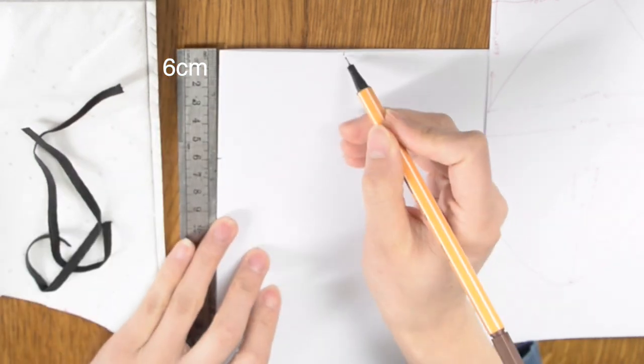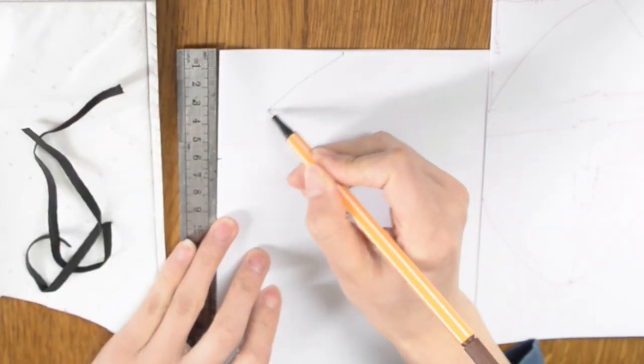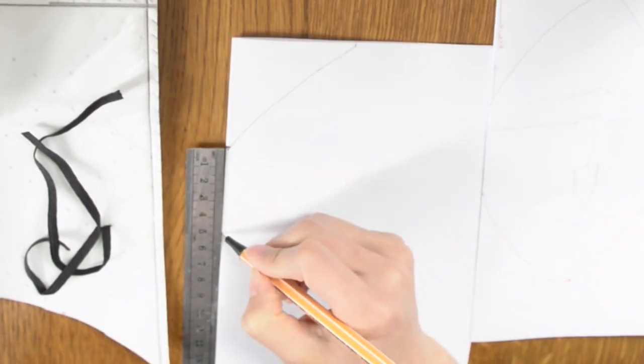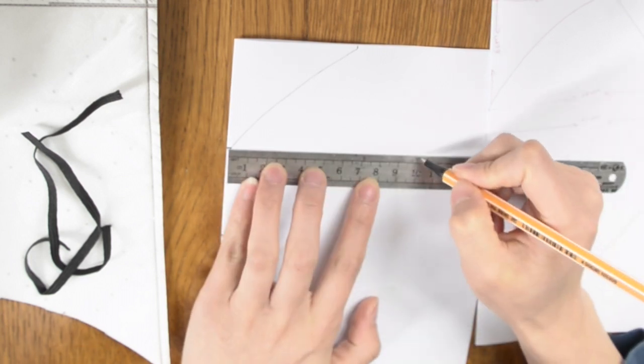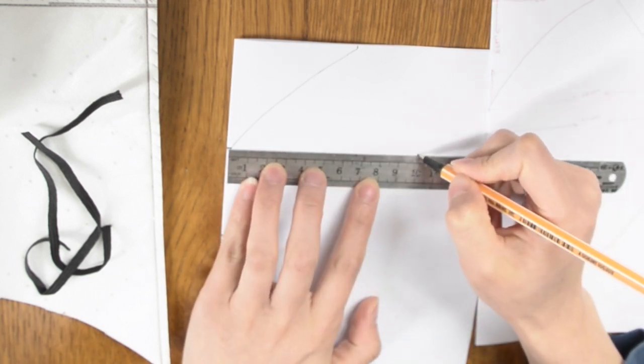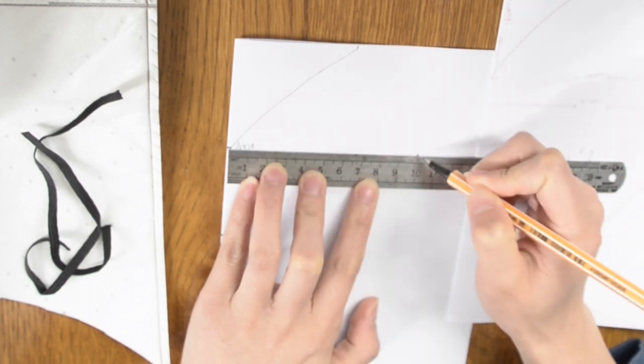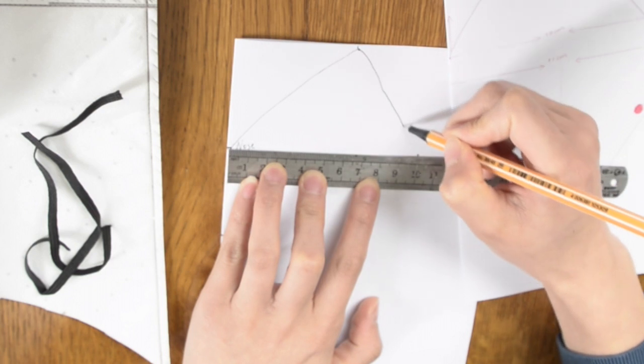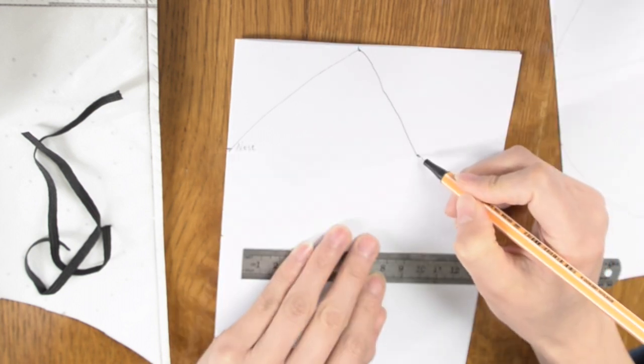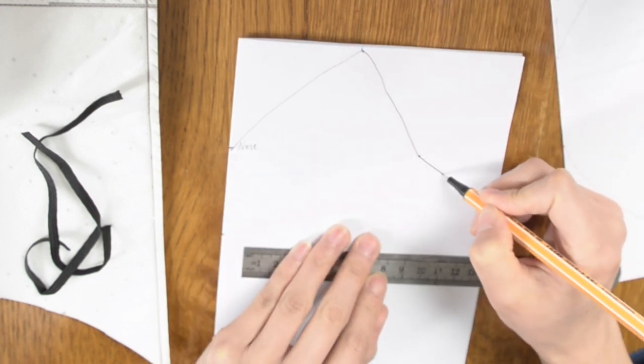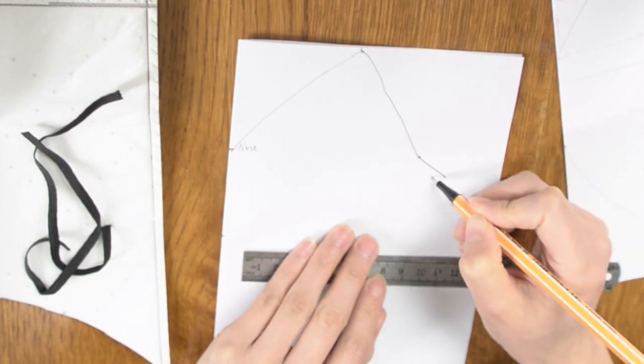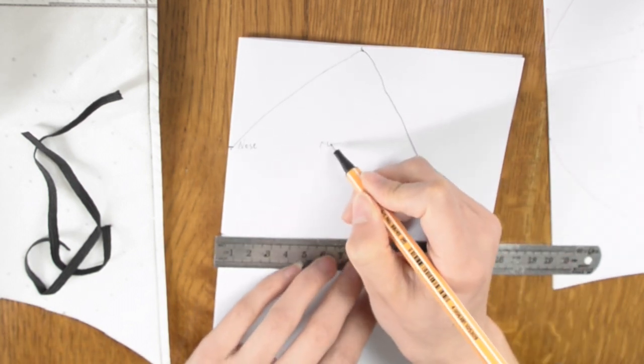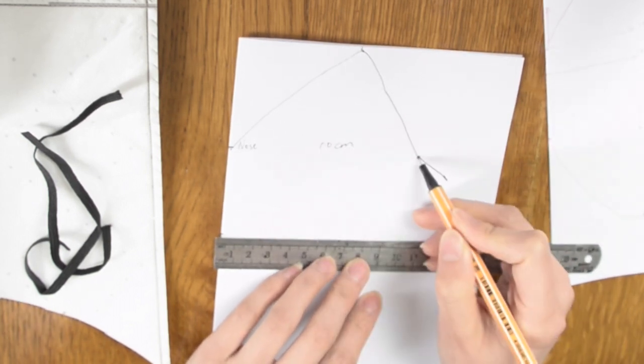So this is gonna be the nose bit. And then five centimeters, and then ten centimeters. So this is from the nose to the corner of your eyes. And then came out a bit to have the elastic bands on for the ears. So this is ten centimeters of the nose, from there to there.